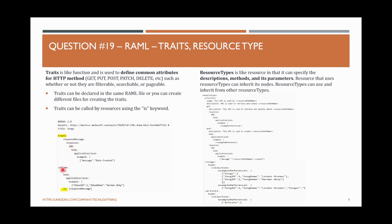For example, a Trait named 'responseMessage' defines: responses: 200, body: application/json, example: 'message created'. Under a resource endpoint 'album' with a POST method, to refer to this trait, use the syntax 'is: [responseMessage]' — whatever you gave in the trait gets copied into that method. This way you can reuse segments across HTTP methods. For example, if you want the same response definition in PUT, DELETE, or GET methods, you can reuse the trait.